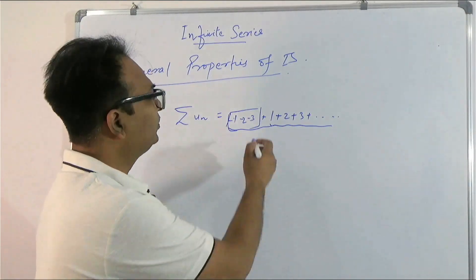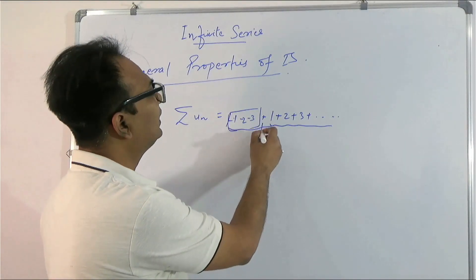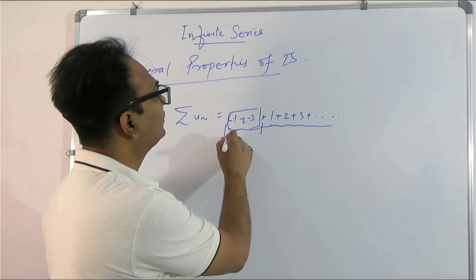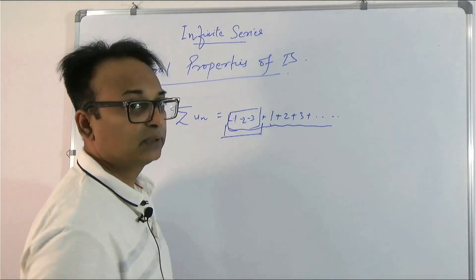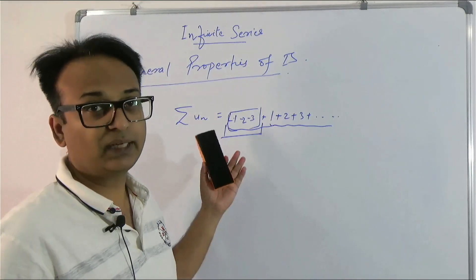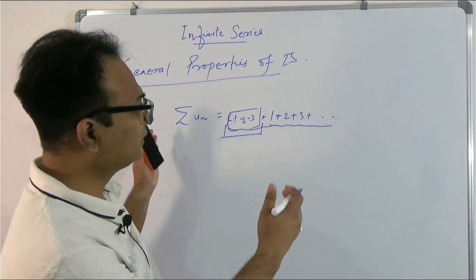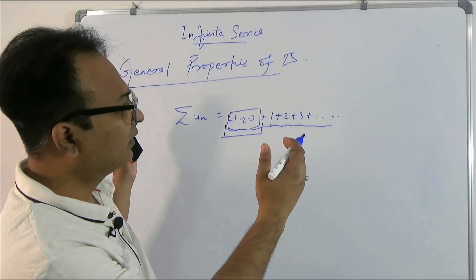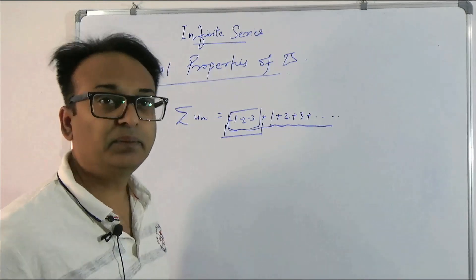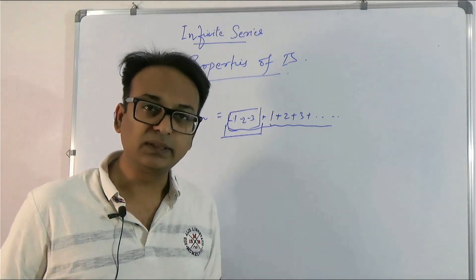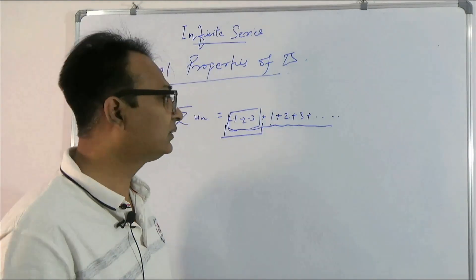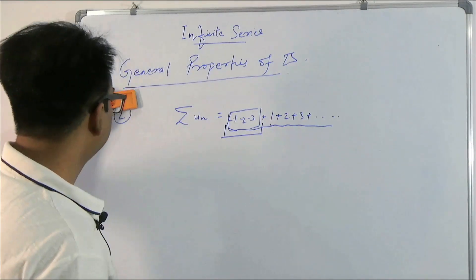We can consider the negative terms as an addition of a certain finite number of terms. Since addition or removal of finite terms does not change the nature of the series, the nature of the series remains constant. This is the second property.